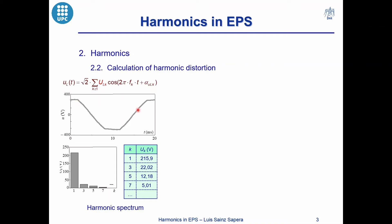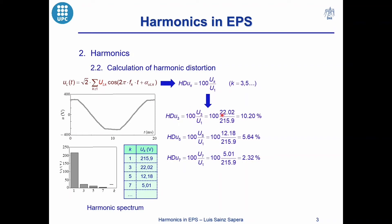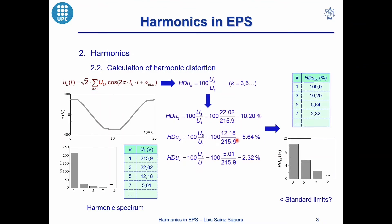To illustrate this, I will analyze the following example. We have a distorted voltage with the root mean square values of the fundamental and the harmonics shown in a table, and I would like to determine the degree of distortion of the voltage. First I will calculate the individual harmonic distortion for each harmonic, dividing the root mean square value of each harmonic by the root mean square value of the fundamental waveform. These results can be shown in a table or in a bar plot and compared with the limits of the standards.